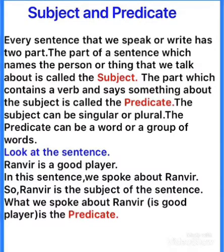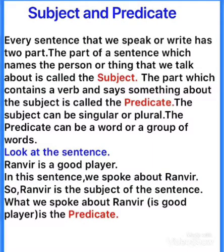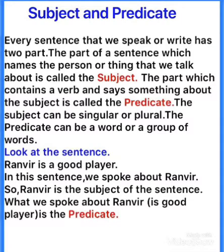Subject singular bhi ho sakti hai, plural bhi ho sakti hai. Aur ek aur baat — subject noun bhi ho sakti hai, pronoun bhi ho sakti hai. Noun jaise kisi ka name ho gaya — like Vanya, like Reeta, Ranvir. Yeh noun bhi ho sakti hai, kisi building ka name, kisi place ka name, birds ka name, animals ka, anything. So subject mein kisi ka name ho sakta hai, matlab woh noun bhi ho sakti hai. Aur pronoun bhi ho sakti hai — jaise he, she, it, they.